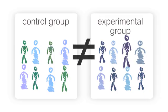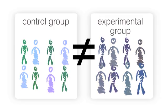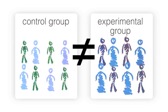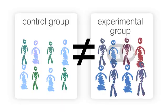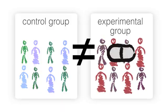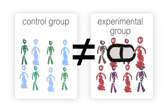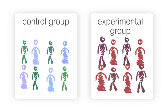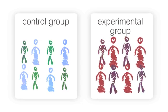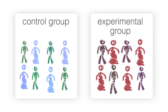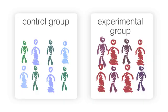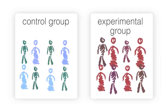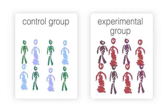However, if the average change in the experimental group is much better or worse than in the control group, it's likely that the new treatment is what's making a difference. A control group is used to help researchers know the difference between these natural changes and the true effects of whatever is being researched.